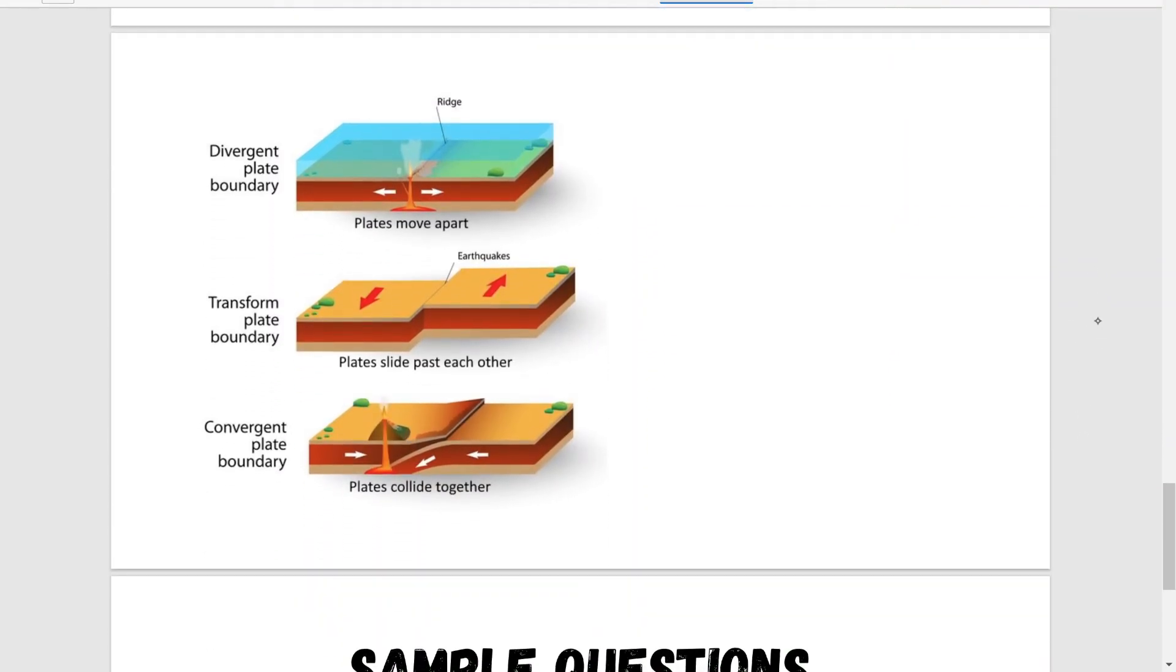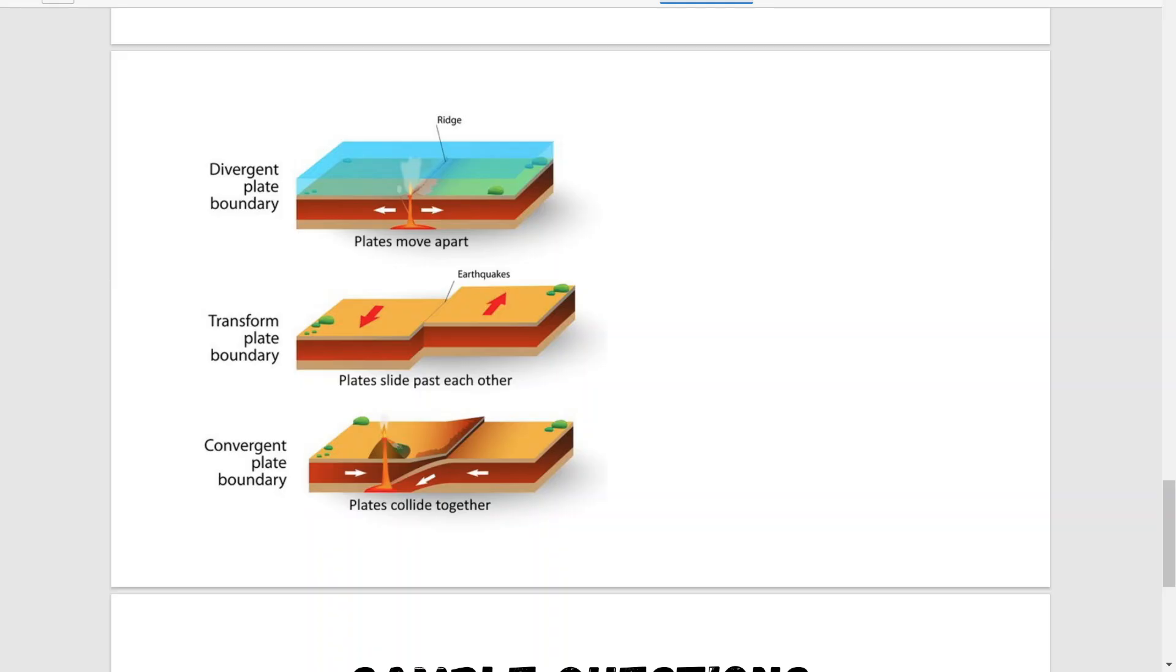That ties us in to the different types of plate boundaries. You've got a divergent plate boundary, a transformed plate boundary and a convergent plate boundary. Each of them work in different ways and each will present or create their own unique features. The first one is a divergent plate boundary, or what a lot of people would call it a constructive plate boundary. It's called that because it creates things.